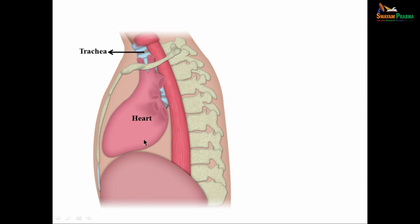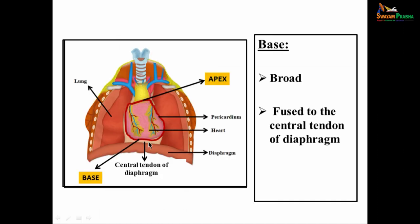In this picture you can see the heart, the sternum, the clavicle and the vertebral bodies, and this is the diaphragm. If you trace the pericardium, it will be continuous with the great vessels and also with the pretracheal layer of the deep cervical fascia. That is about the apex. Now going to the base — the base of the fibrous pericardium is broad and is fused to the central tendon of the diaphragm.